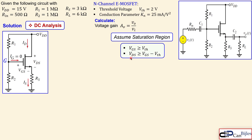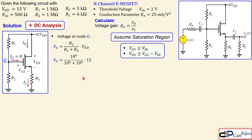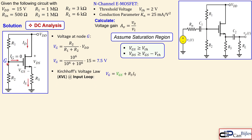For the saturation region we need to check two conditions: VGS must be greater than or equal to the threshold voltage of 2 volts, and VDS must be greater than or equal to the overdrive voltage VGS minus the threshold. We assume saturation first and check afterward. For the voltage at node G, we apply the voltage divider rule since the input impedance is infinite. VG equals R2 over R1 plus R2 times VDD, giving 7.5 volts. Using Kirchhoff's voltage law at the input loop, VG equals VGS plus IS times RS.